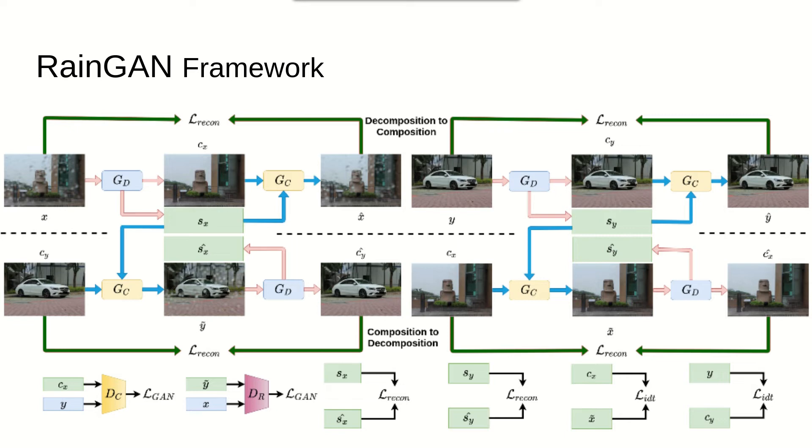RainGAN comprises two generators and two discriminator networks. The training process consists of a decomposition-to-composition and a composition-to-decomposition pipeline. The decomposition-to-composition pipeline decomposes an image into a clean image and a rain drop style, regardless whether it contains any rain drops. Then, it composes them back to the input image. The identity loss is applied to the translated clean image when the input image is clean. The objective is to train the decomposition generator to learn the identity mapping for the clean image. The adversarial loss is applied to the translated clean image when the input is a rain drop image. The decomposition generator is enforced to generate a clean image to fool the discriminator. Reconstruction loss is applied between the input images and composed images to enforce all the input image information is kept in the translated image and the rain drop style code.